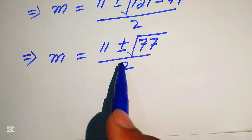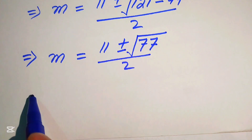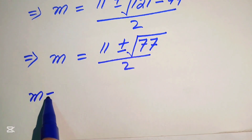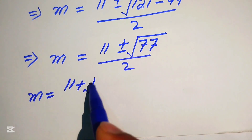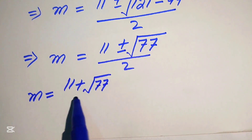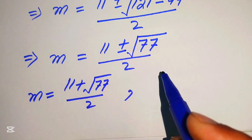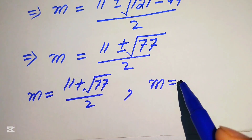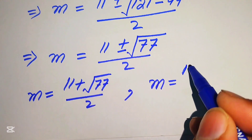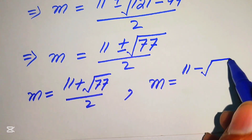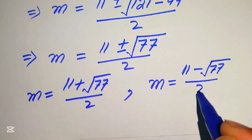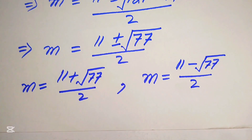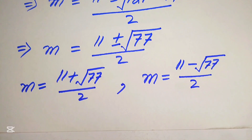These give two values of m. The positive value is m equals 11 plus square root of 77 divided by 2, and the negative value is m equals 11 minus square root of 77 divided by 2.